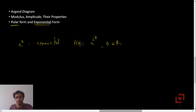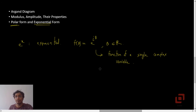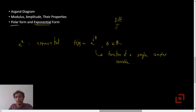Now you do not have the differentiation and integration of such functions yet — this is a function of a single complex variable, because you have i there. Although theta is a real number, e to the power i theta is a complex number. If you treat the variable to be i theta, it will be a function of a single complex variable, just like you have differentiation and integration of functions of a real variable, you also have differentiation and integration of complex variables.